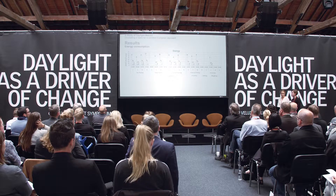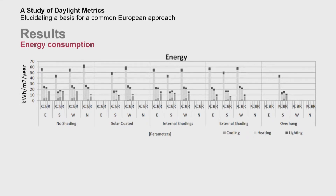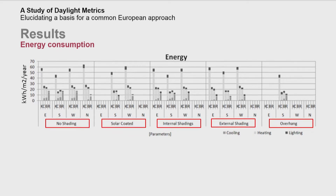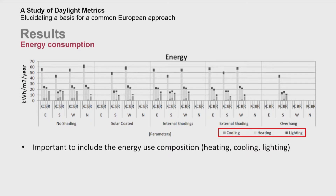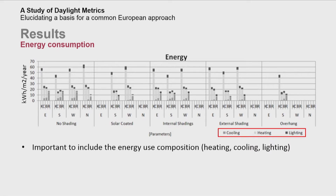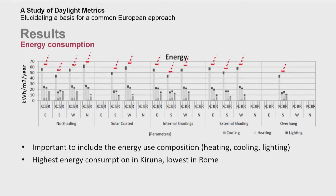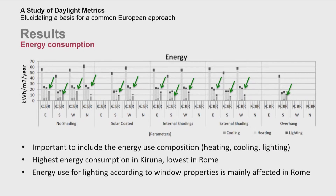Besides the impact on daylight performance metrics, the analysis also included the effects on energy consumption. What is shown here is the energy consumption for the five different window elements, each shown for the four orientations and the four locations. The analysis only investigates cooling, heating, and lighting demands since these are the only ones affected by the investigated parameters. It was found that the highest energy consumption was in Kiruna and the lowest in Rome, but also that changes in energy use for lighting due to changes in window properties were mainly affected in Rome.